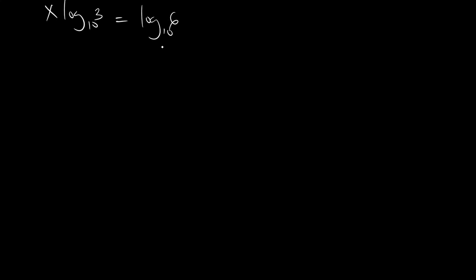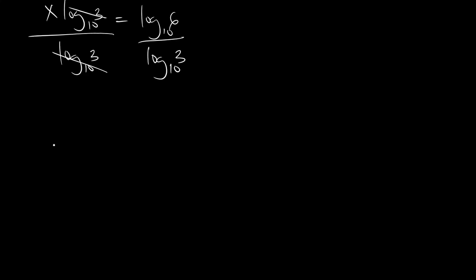So dividing both sides by log 3 base 10 — log 3 base 10 will cancel out — you now have x is equal to log 6 base 10 divided by log 3 base 10.